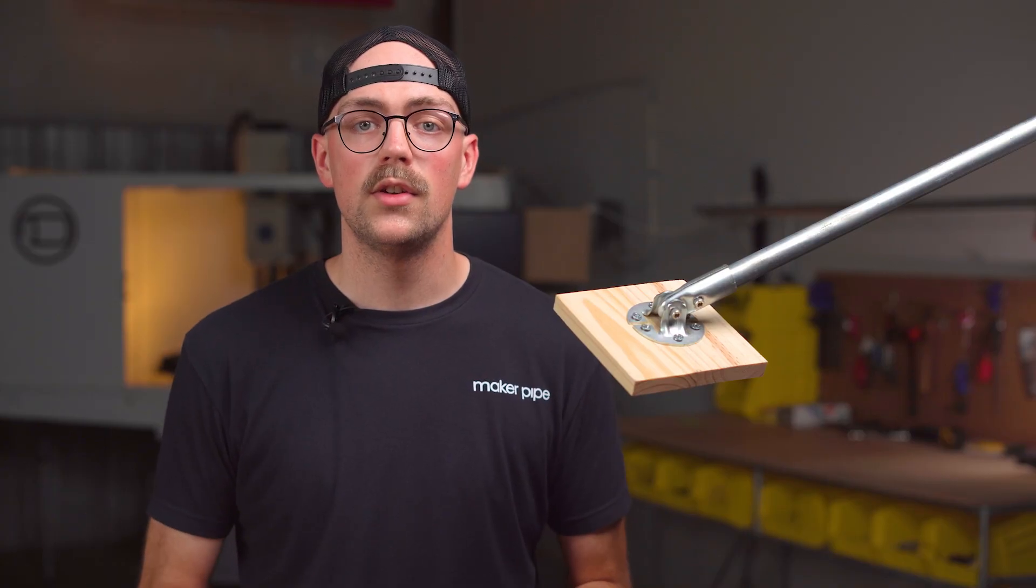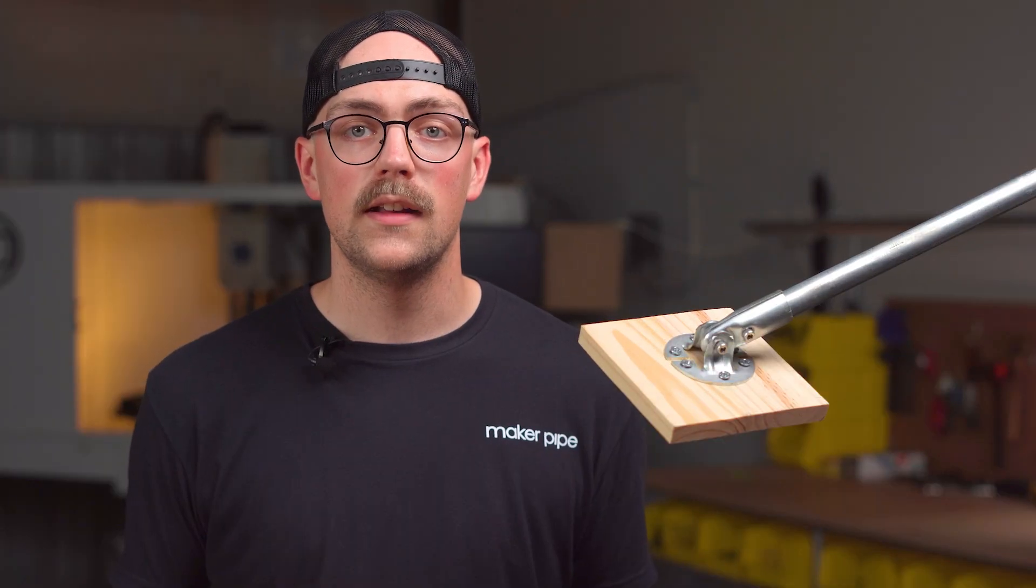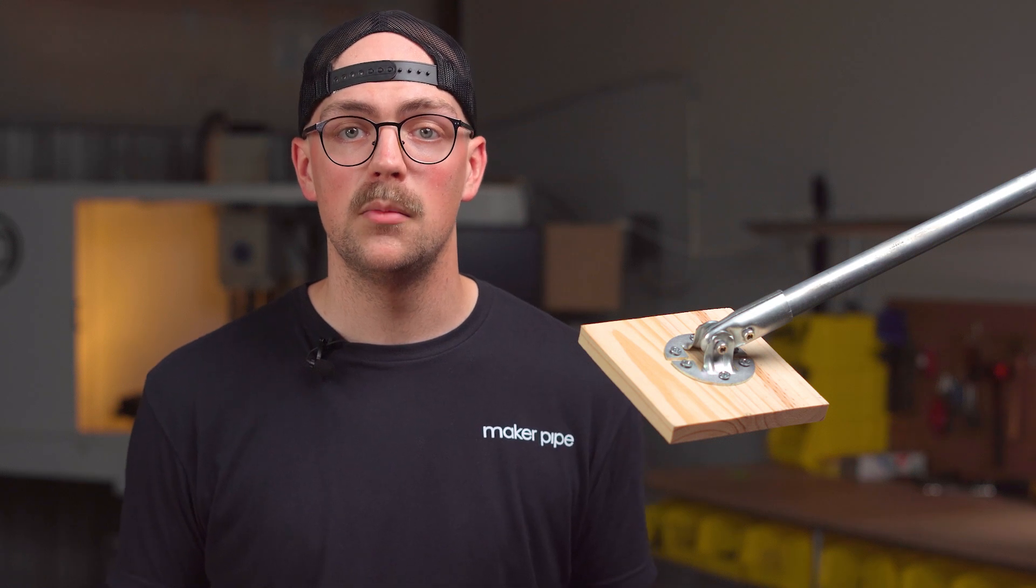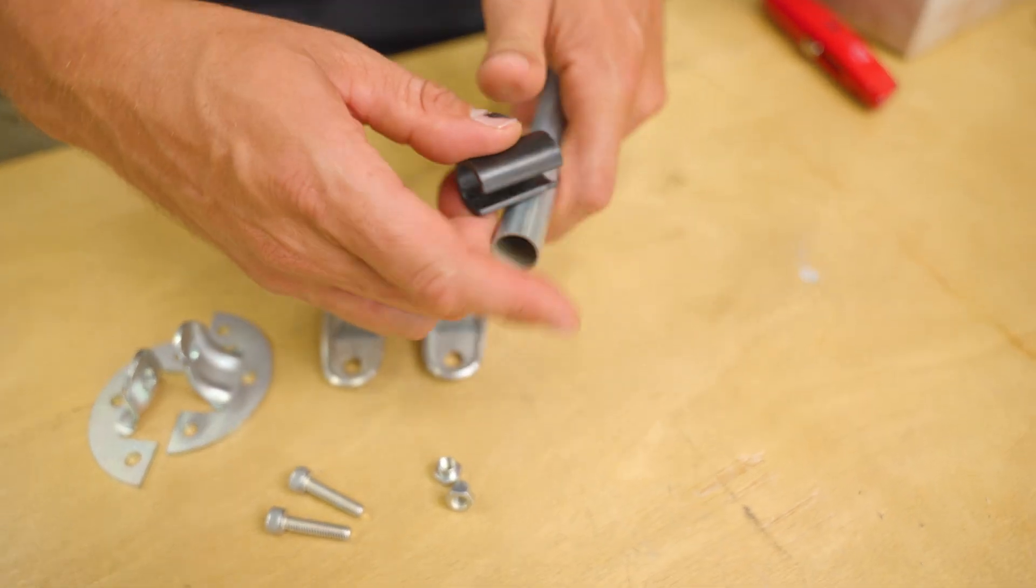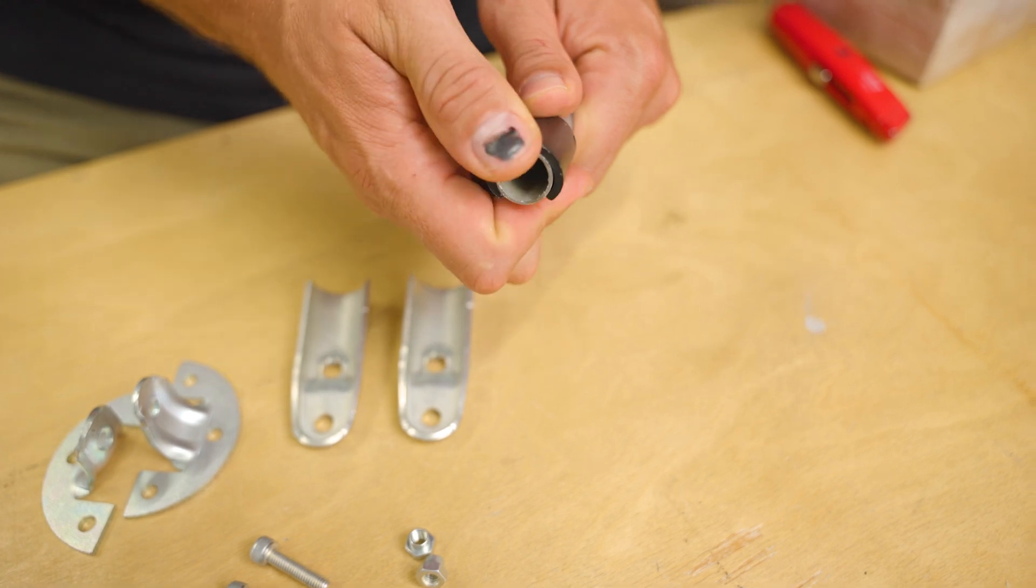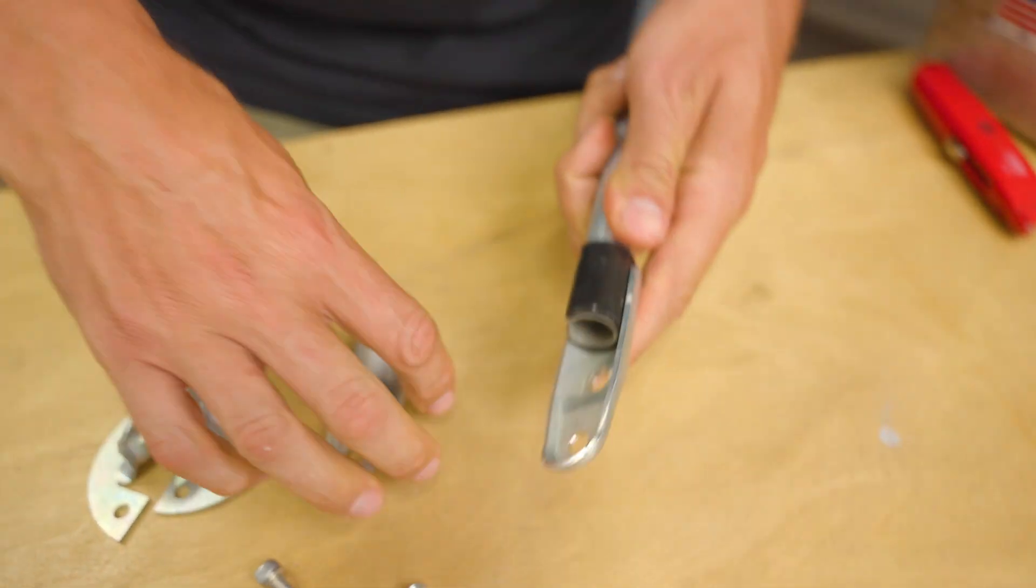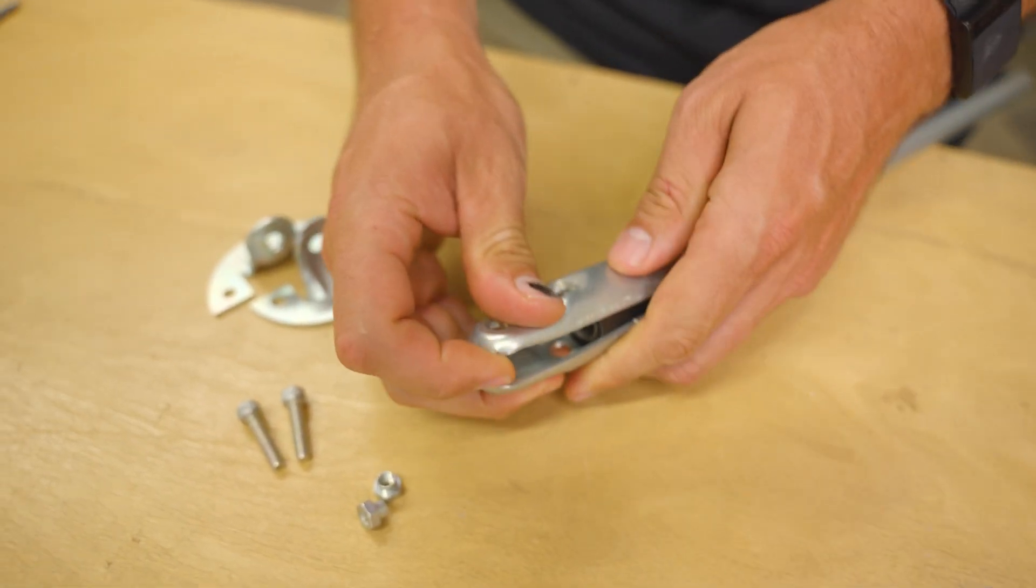The adjustable angle flange is currently sold in three variations. All three sizes of the adjustable angle flange function and assemble the same way with one exception. The half inch EMT conduit version will come with one of these black plastic adapter shims that need to be snapped onto the half inch conduit before you can assemble the connector like normal.